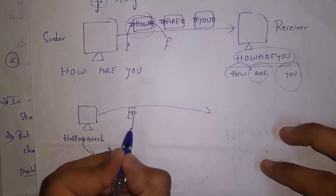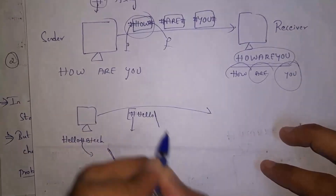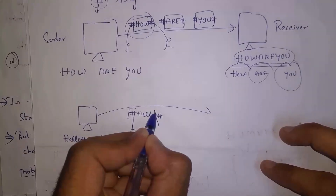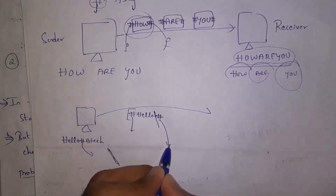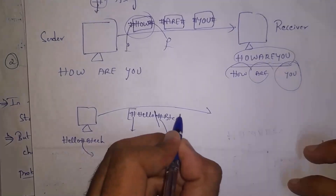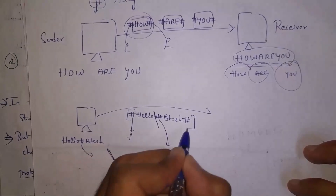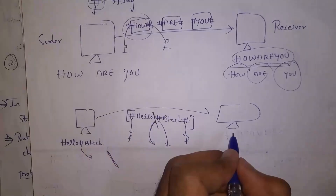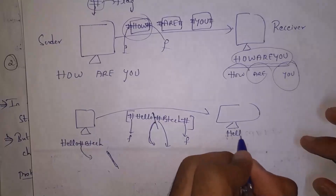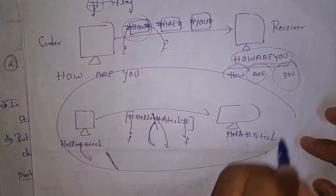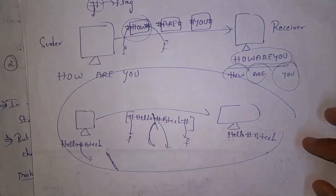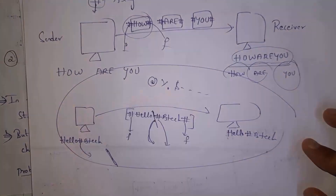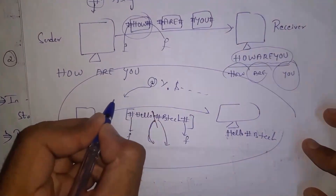For example, if the sender wants to send 'hello#btech' where the flag is also hash (#), the message contains the flag character. When the message contains the flag character, the character stuffing method includes a backslash before it: #hello\#btech#. Whenever the receiver sees a backslash, it understands that hash belongs to the message, not the flag. The receiver removes the backslash and reads the actual data 'hello#btech'. You can use any special character as a flag — like *, %, $ — but if that character appears in the message, include a backslash before it.